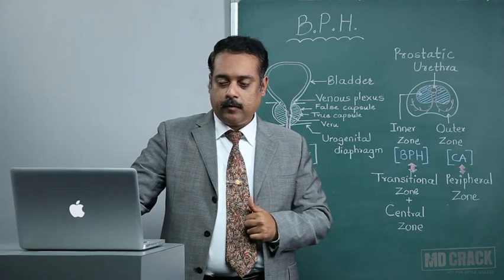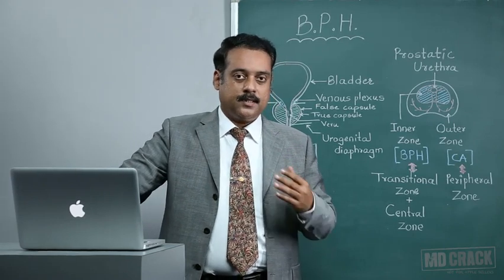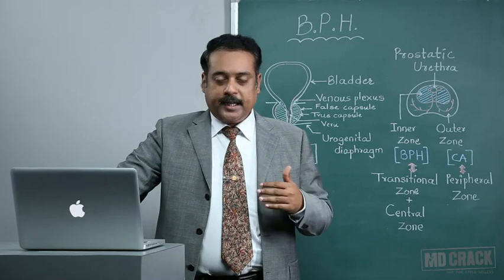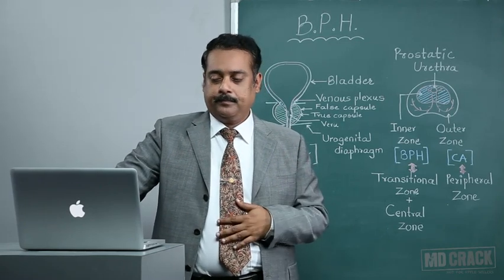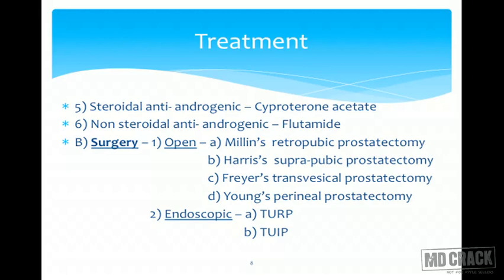For surgery, what options do we have? Previously only open surgical prostate treatment was available. Various prostatectomies were devised: Millin first performed retropubic prostatectomy, Harris performed a suprapubic type, Freyer's was a transvesical approach, and Young's was a perineal approach. Of these, Harris's and Young's treatment is now obsolete. A few senior urologists still perform Millin's or sometimes Freyer's transvesical prostatectomy for a very large prostate.